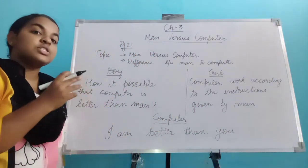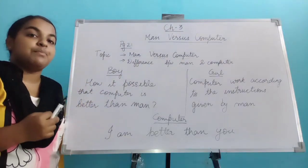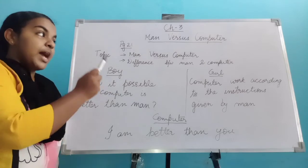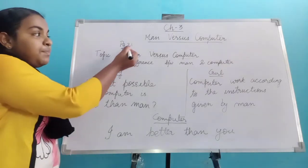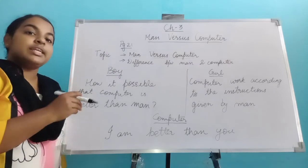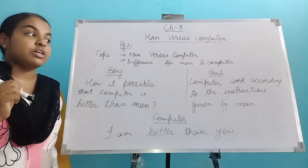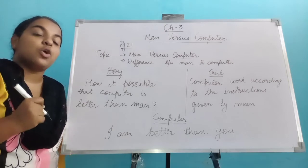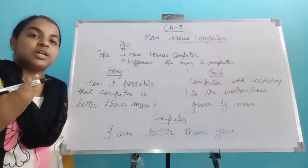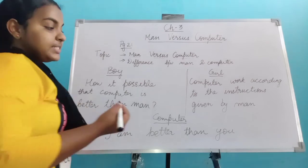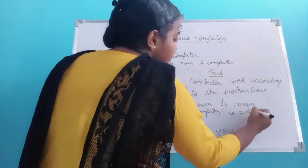This is the first topic of our chapter, that is man versus computer. In today's class we learned about the man versus computer argument by a boy and a girl, which is on page number 21. The boy is asking how it is possible that a computer can be better than a man, and the girl replies that the computer is a machine which works according to the instructions given by a man.